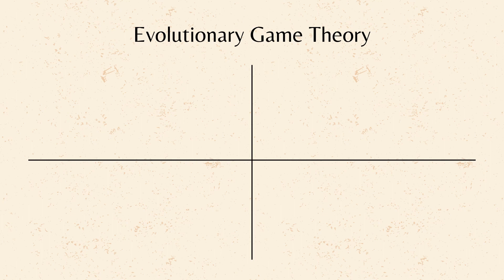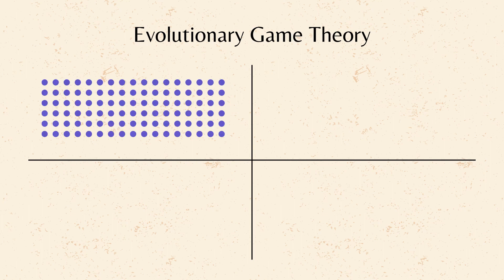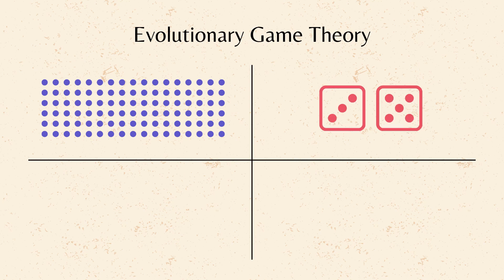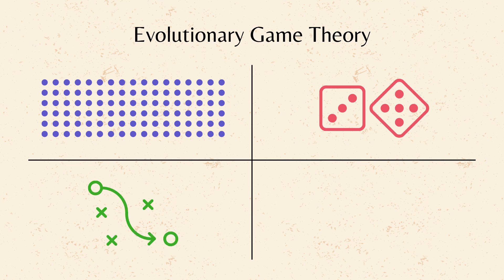Here are the key concepts. Population is a group of organisms with varying traits or strategies for interacting with each other. A game represents the interaction between organisms with defined rules and payoffs like survival or reproduction. Strategies are different ways organisms can behave in a game, like cooperate, compete, or deceive.